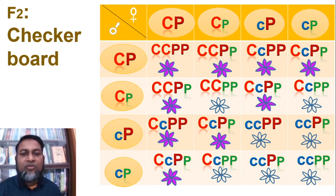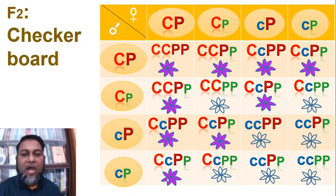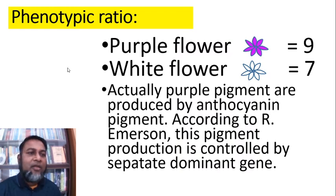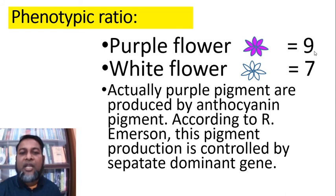From this checkerboard we found 9 purple color flowers and 7 white color flowers. So the phenotypic ratio is purple flower 9 : white flower 7, giving a 9:7 ratio.